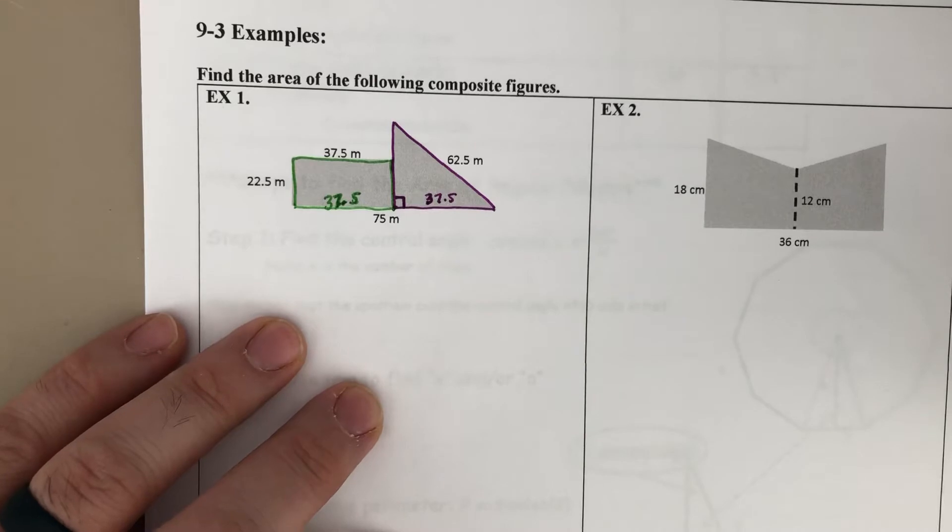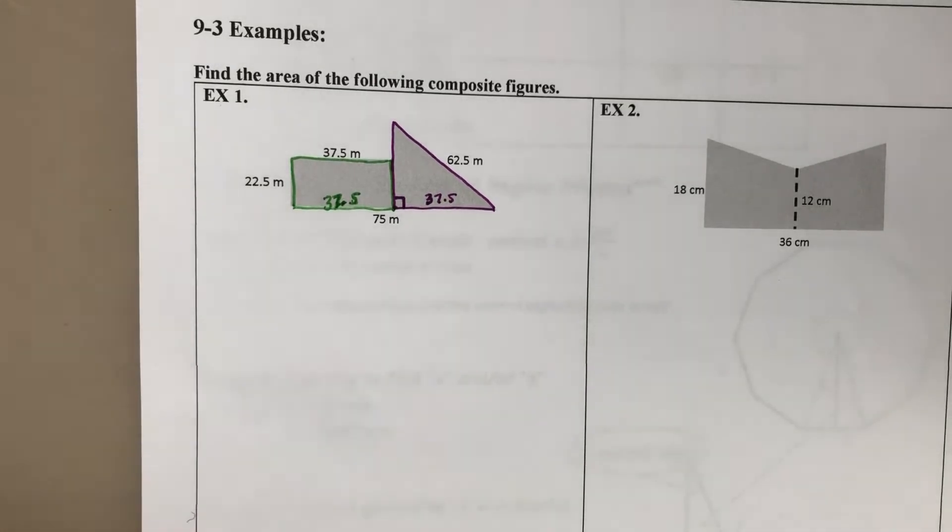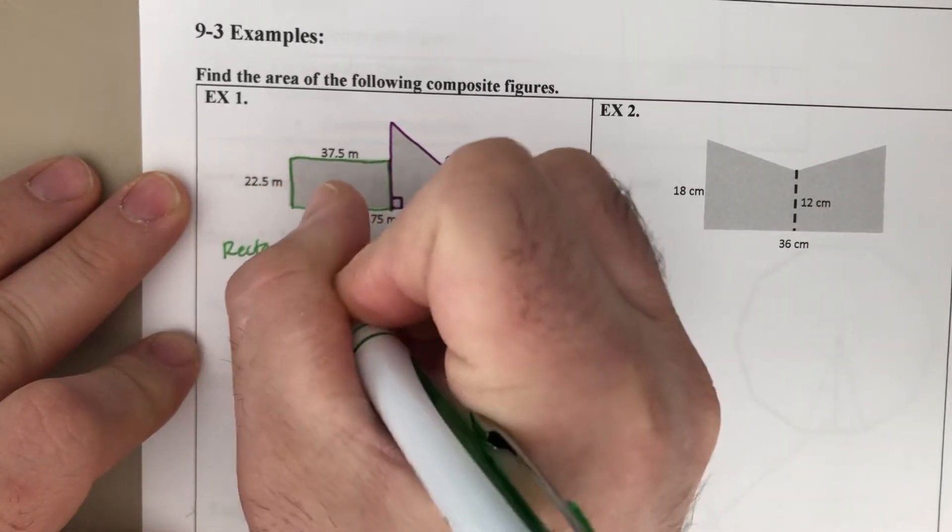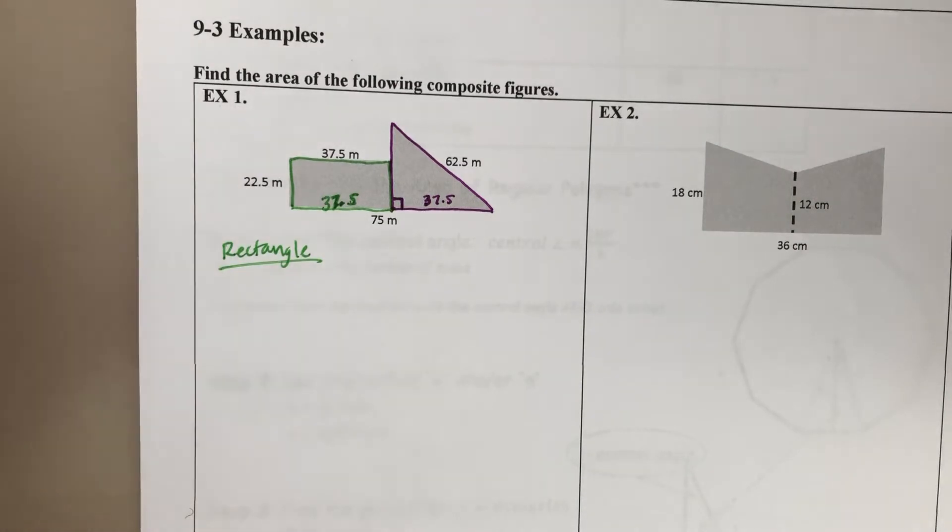So as far as finding our areas, and remember, you go back to the rules that we told you guys to use. Like what are the three things you got to do? First is identify the shape and the formula that you need. Find any of the missing pieces that you need for the formula, and then plug it in and chug away.